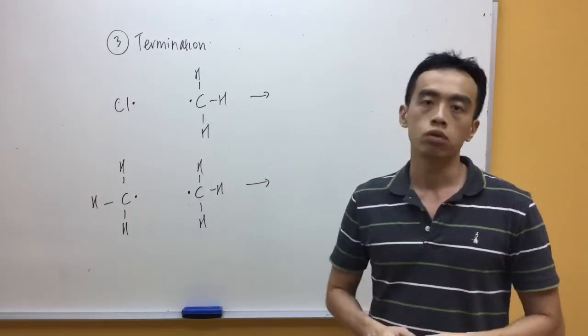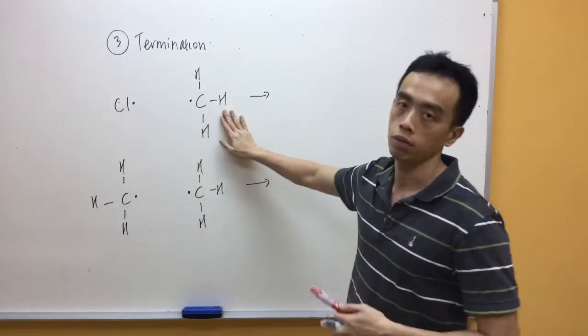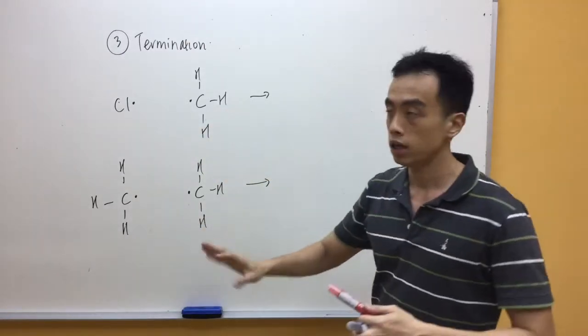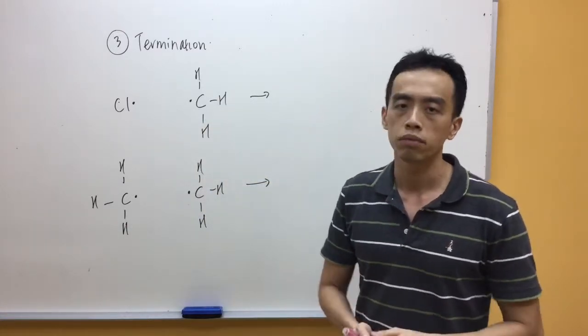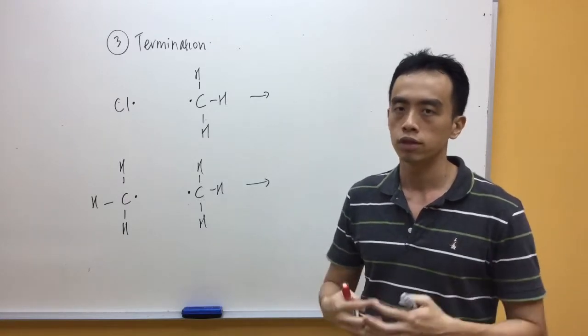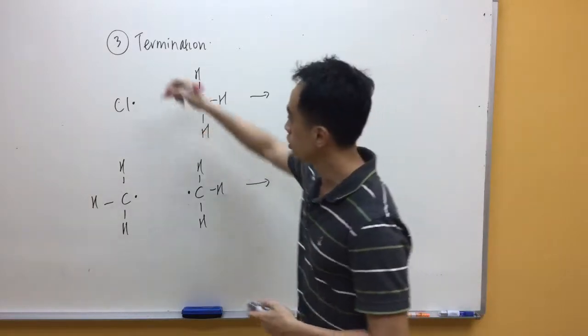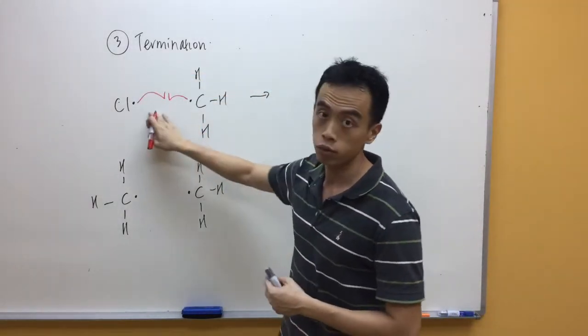Okay, as mentioned previously, these are the two termination steps that we will write down. One involving chlorine radical and my methyl radical. And the other one involving two methyl radicals. Again, these few radicals can be found in the propagation step. So there's no need for us to memorize them. You just pull any two radicals you can find in the propagation step. You just react them together in the termination step.